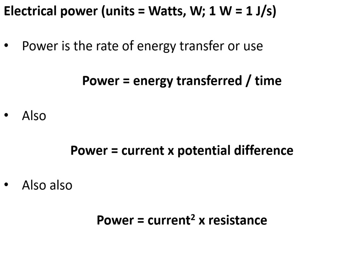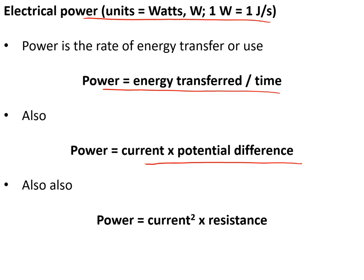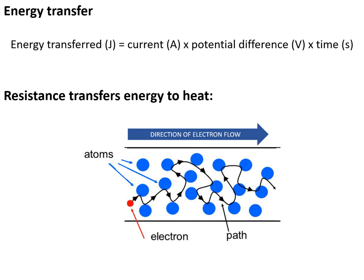Electrical power is the rate of energy transfer, measured in watts — one watt is one joule per second. It can be calculated as: power = energy transfer ÷ time, or power = current × potential difference, or power = current² × resistance. The equation you use depends on the information given in the question. Electricity can transfer energy very easily; to calculate the amount of energy transferred: energy = current × potential difference × time, with time in seconds.